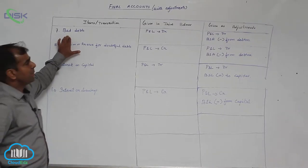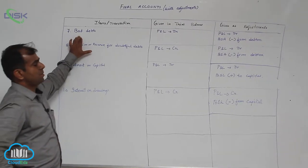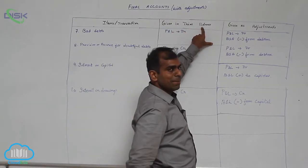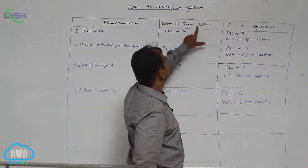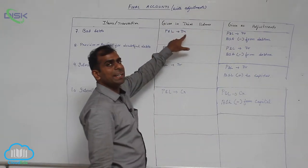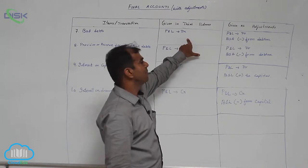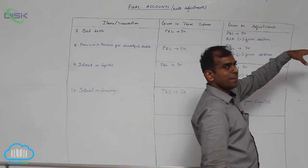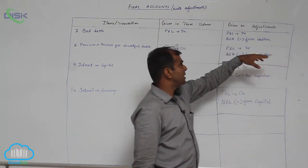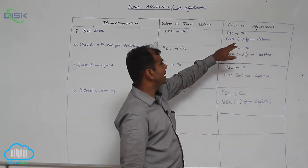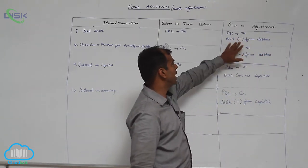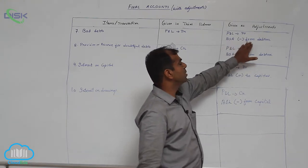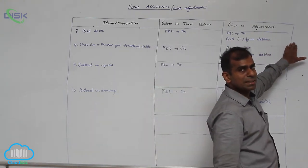Bad debts. The treatment for bad debts: if bad debts is given in the trial balance, you will take the amount on the P&L debit side because it is a loss. If bad debts is given in the adjustment, you take it on the P&L account debit side, and in the balance sheet on the asset side, you will minus it from debtors.